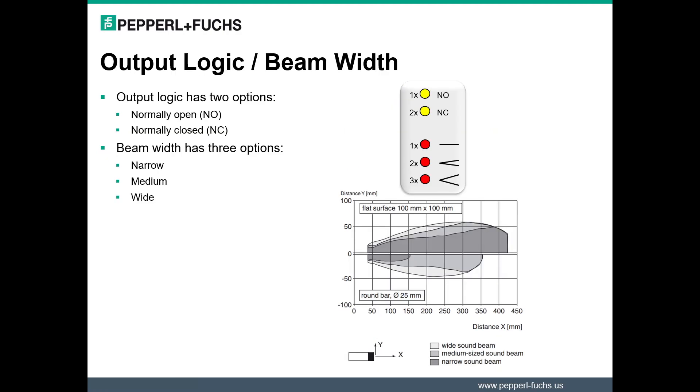The F77 ultrasonic sensor offers two different types of output logic, normally open and normally closed. The standard model of the sensor offers three different options for your beam width: narrow, medium, and wide. You can see roughly what those would look like on the image displayed on the slide. However, when using an IO-Link sensor, more beam width options are available.